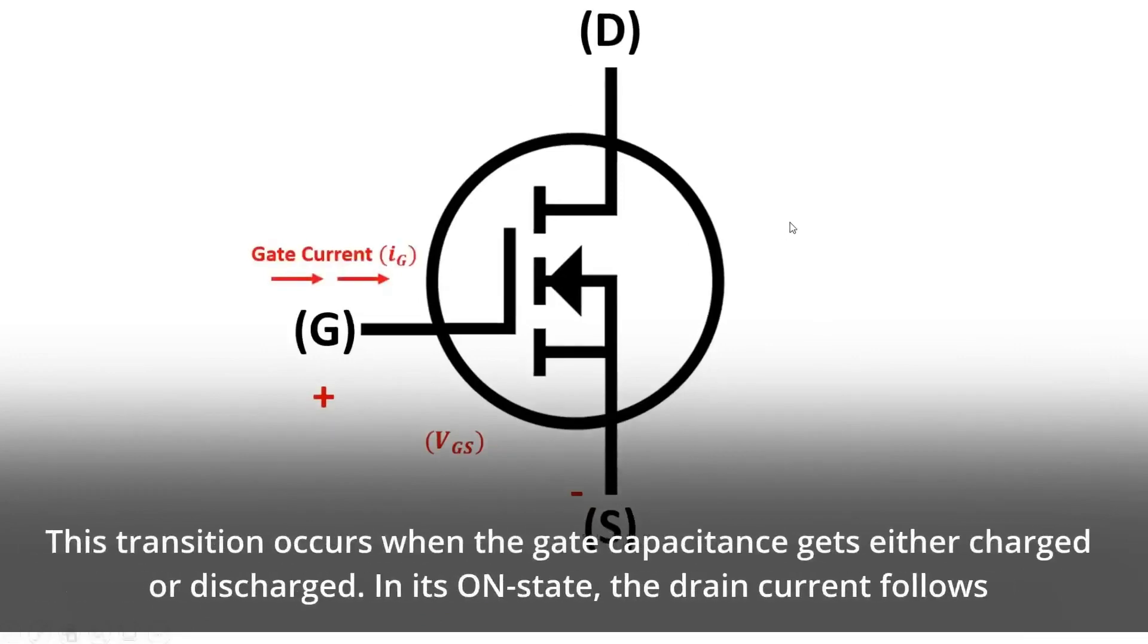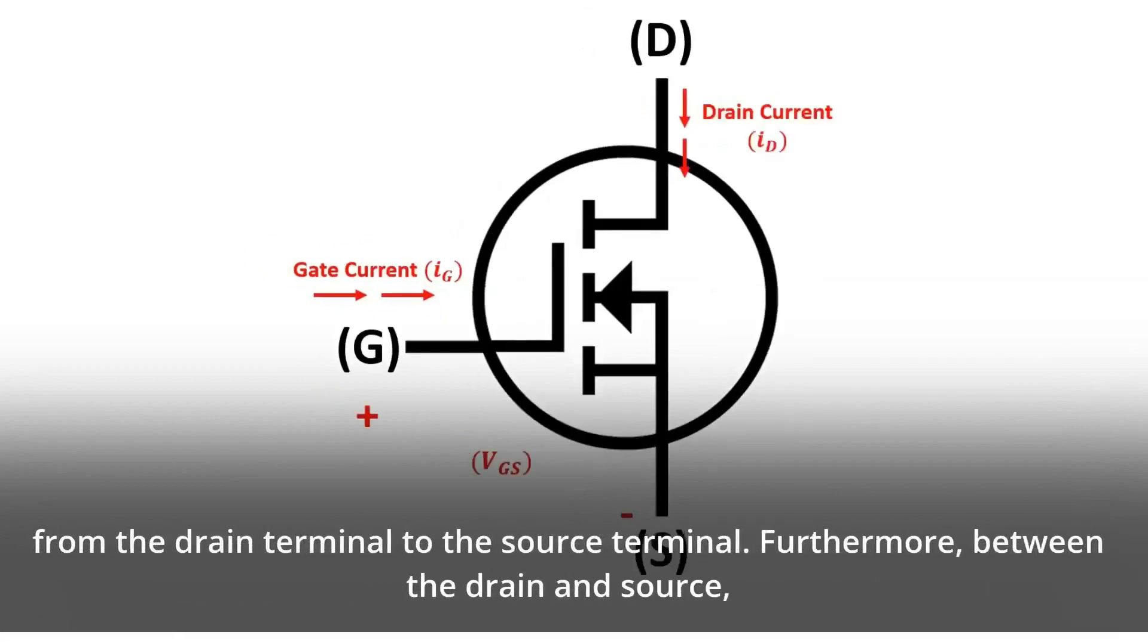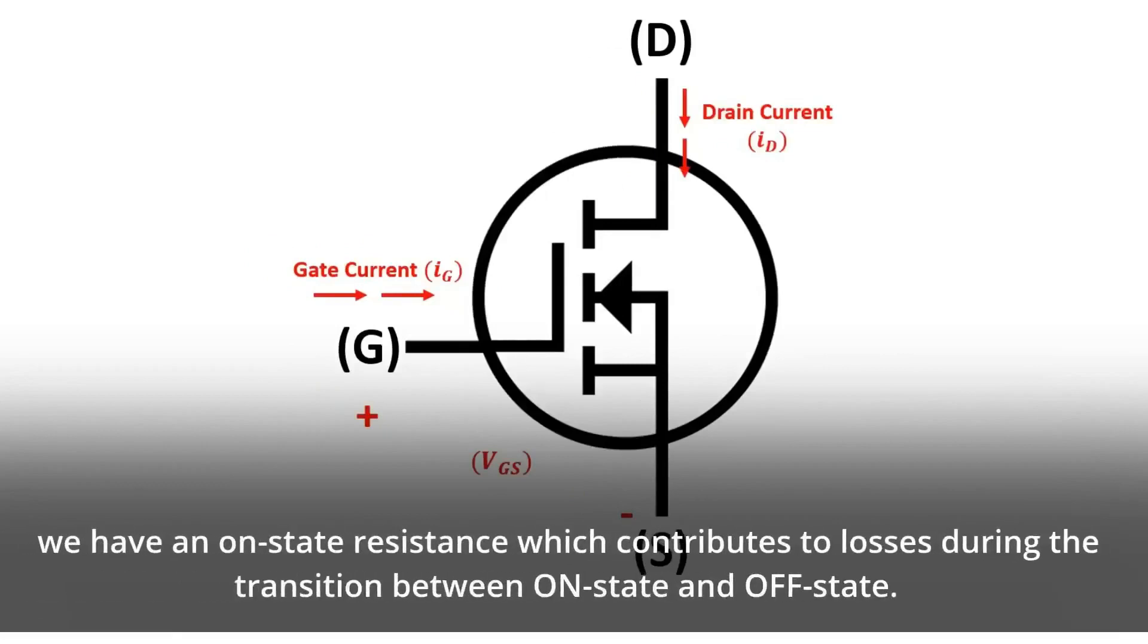In its on-state, the drain current flows from the drain terminal to the source terminal. Furthermore, between the drain and source, we have an on-state resistance which contributes to losses during the transition between on-state and OFF state.